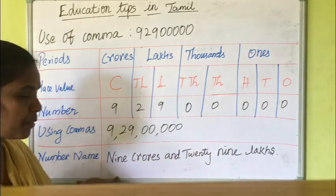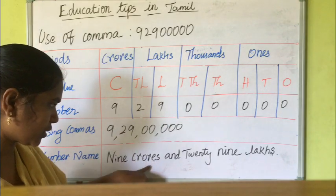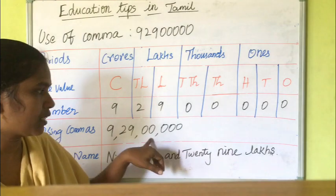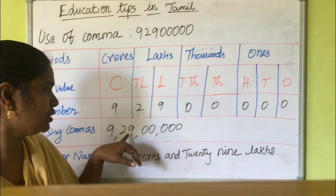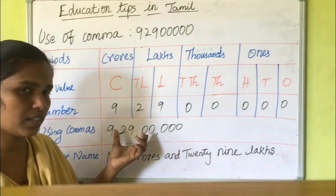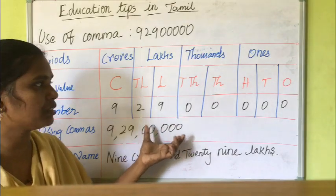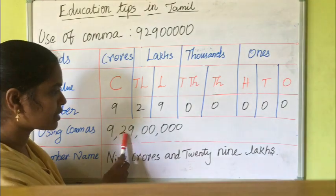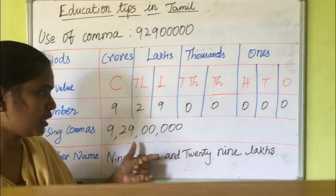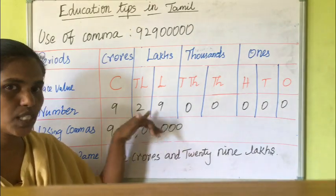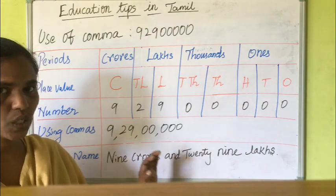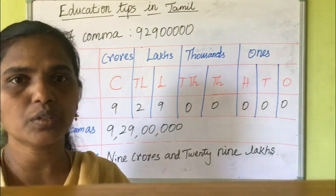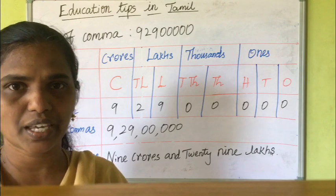So the number name is: nine crores, twenty-nine lakhs... That's all. Thank you students. Please like and share the video. If you have any doubt, comment in the comment box and I will reply.